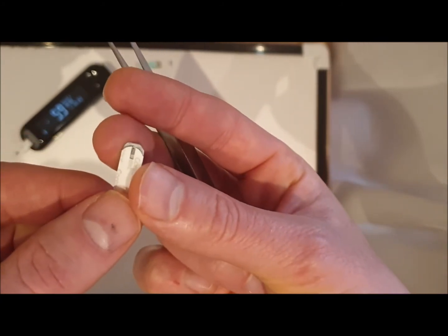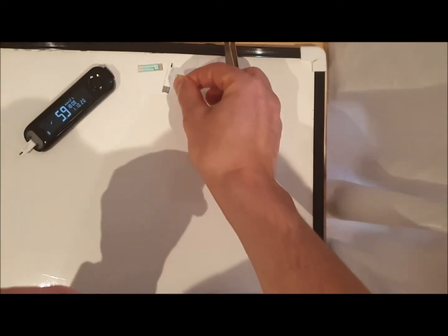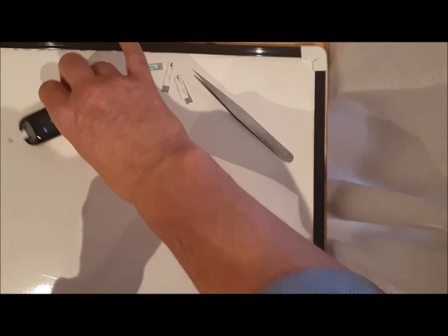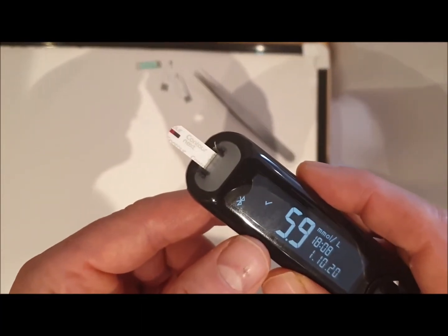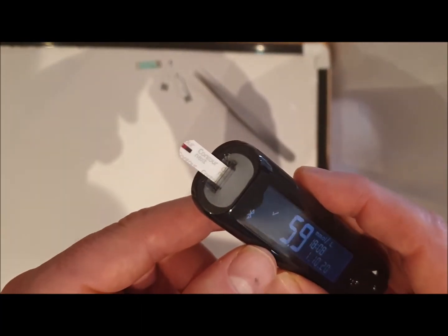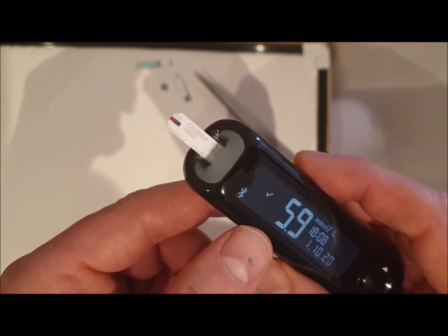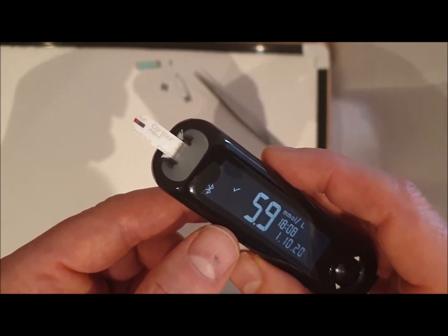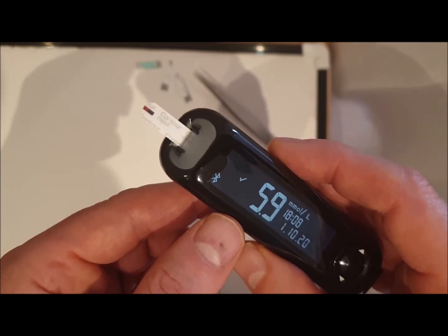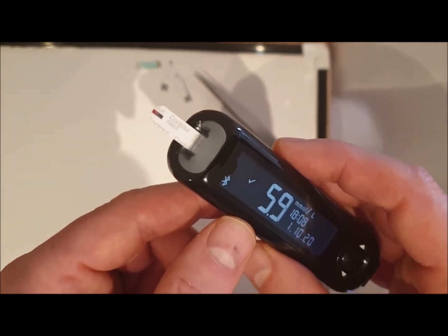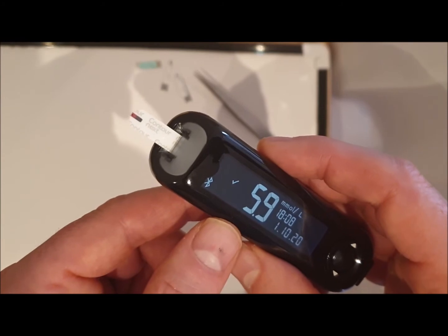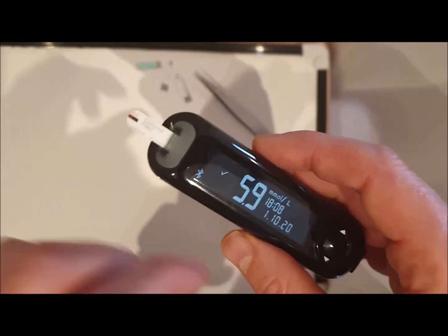These sample volumes can be as small as 300 nanoliters, so they're really quite small. A nice thing about electrochemical biosensors in general is they really don't need much sample in order to operate. They can be quite small.